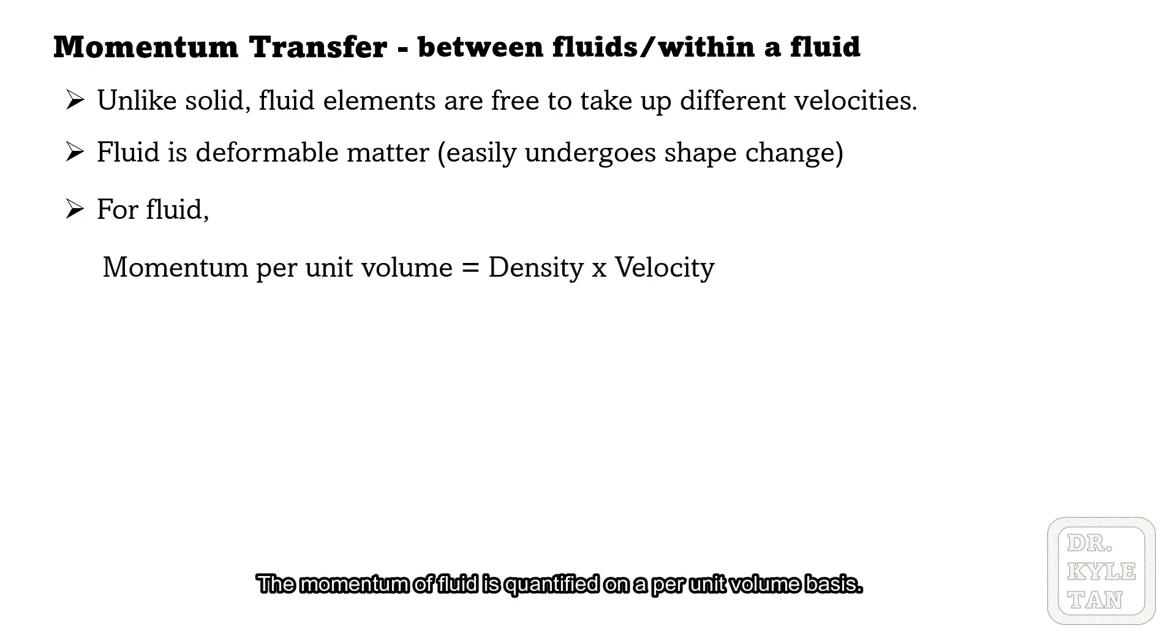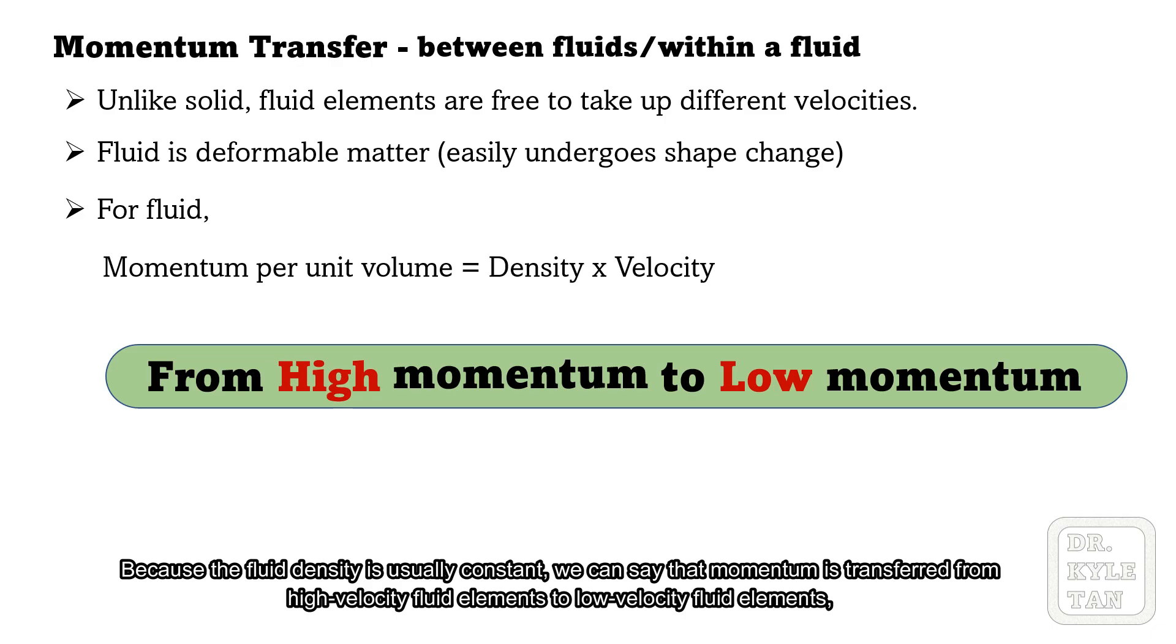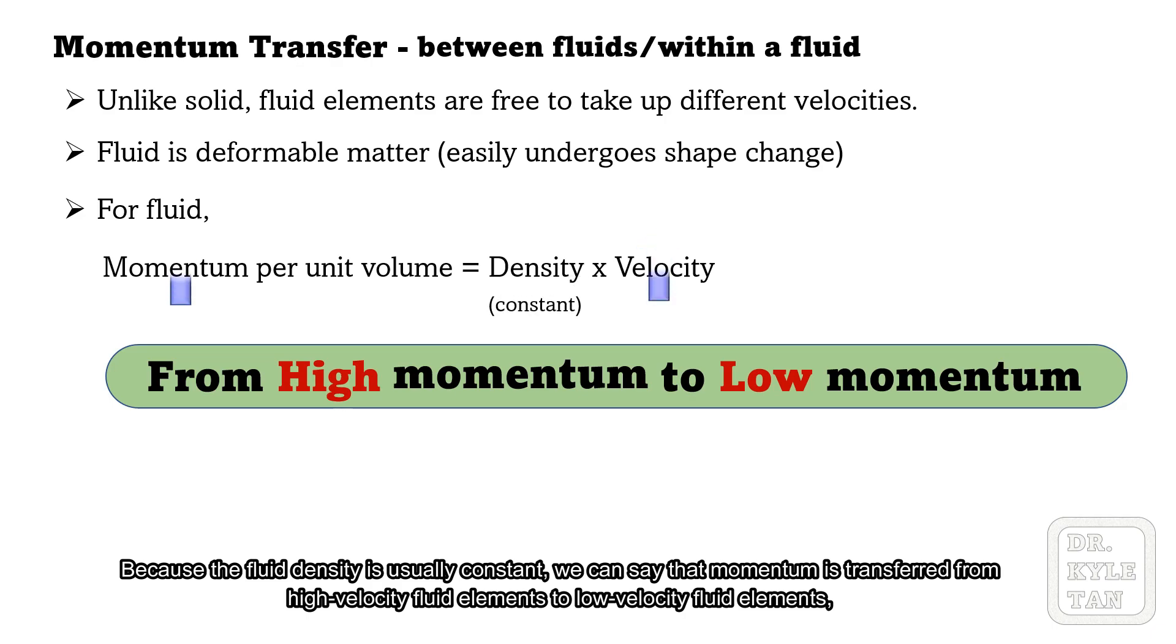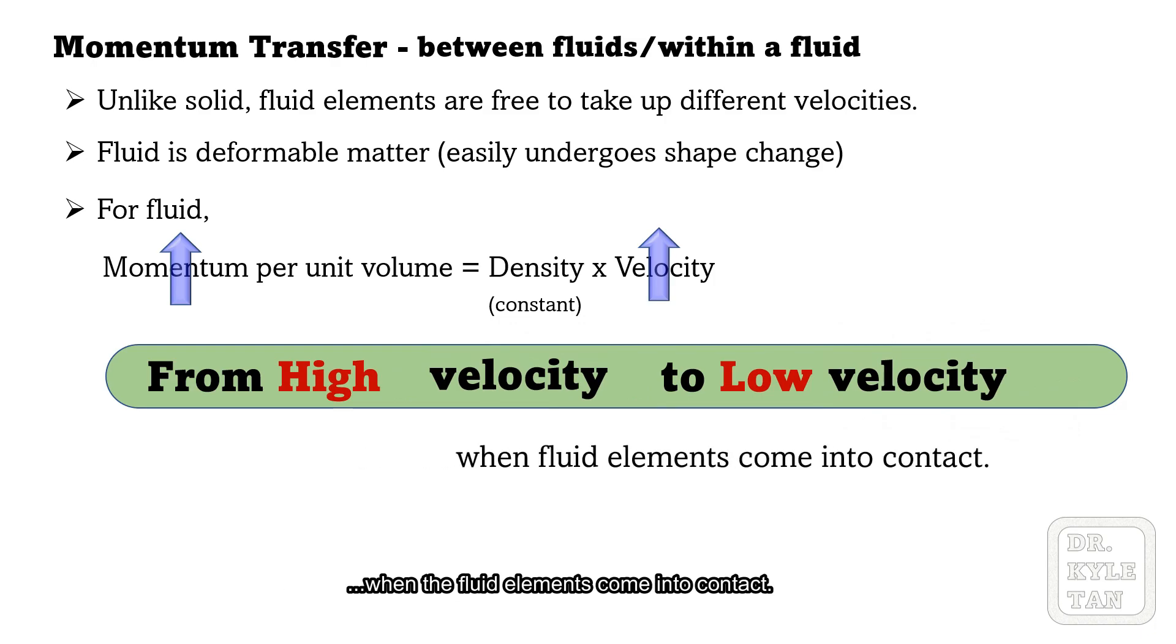The momentum of fluid is quantified on a per unit volume basis. As with solid, momentum is transferred from high momentum fluid elements to low momentum fluid elements. Because the fluid density is usually constant, we can say that momentum is transferred from high velocity fluid elements to low velocity fluid elements when the fluid elements come into contact.